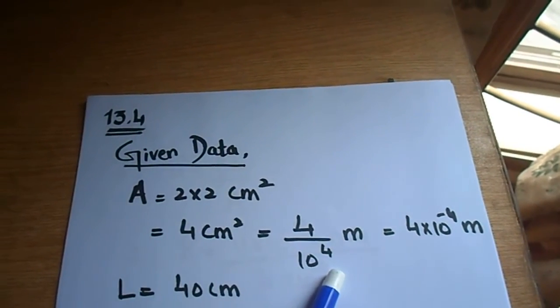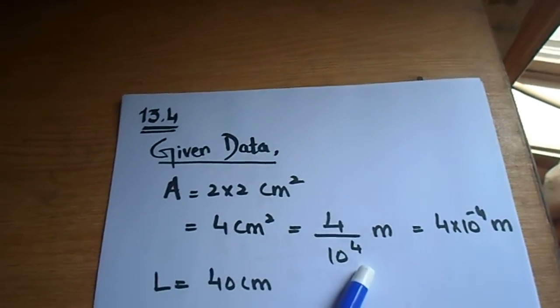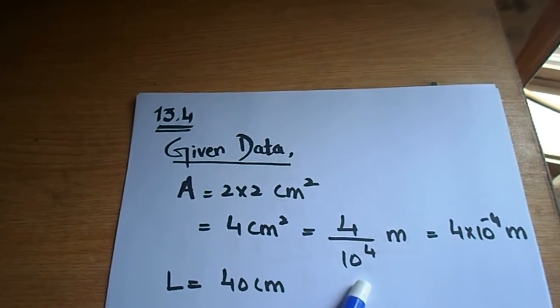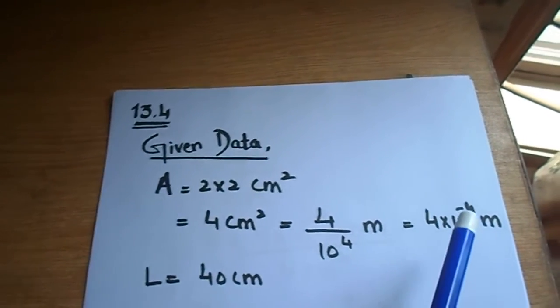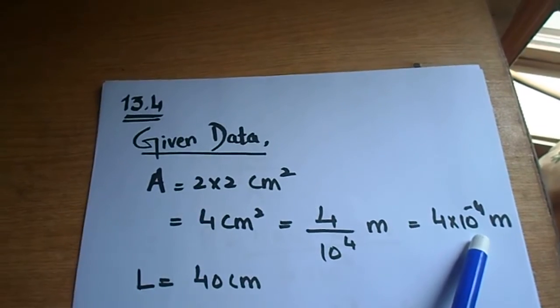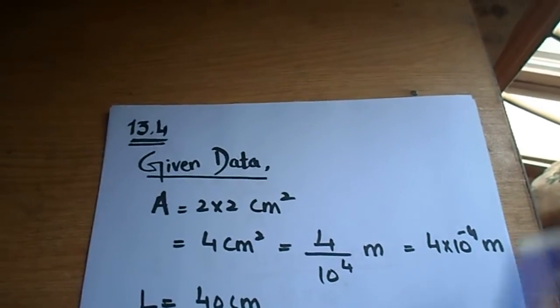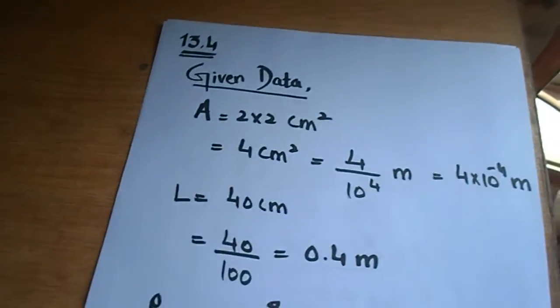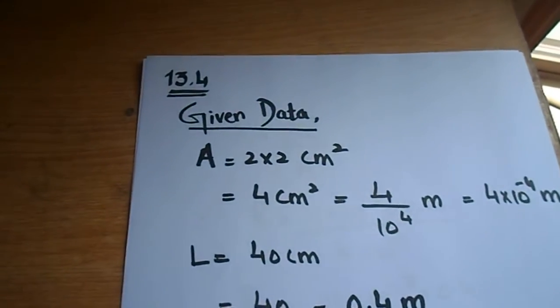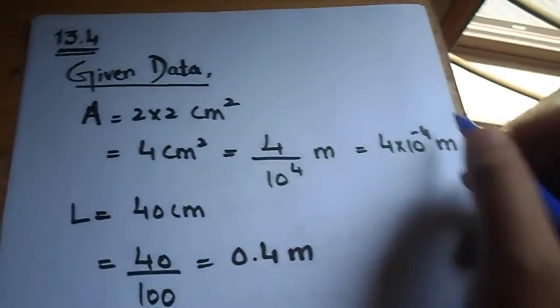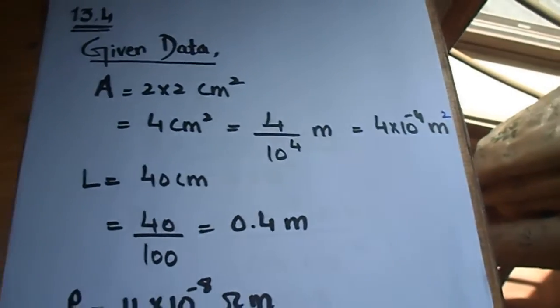So 10 to the power 4, we have denominator 4 divided by 10 to the power 4. If we take the numerator, then it is 10 to the power minus 4, and this will answer in meters. We have converted cm square to meter square, which is 4 into 10 to the power minus 4 meter square.